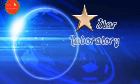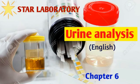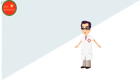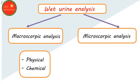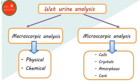Hi friends, this is a Star Laboratory production. Today we are going to discuss about the urine analysis chapter 6. As discussed earlier, urine analysis can be classified into two major categories: macroscopical analysis and microscopical analysis. Under macroscopical analysis we can sub-categorize into physical and chemical analysis. Physical analysis we have already discussed in detail.